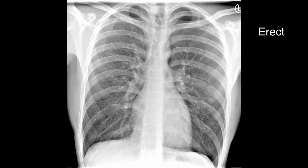Here's another example. The lung edge is a little easier to see. Again, this is in the erect position. And if you were in any doubt, the absence of lung markings in the pneumothorax tells you that there is a pneumothorax.